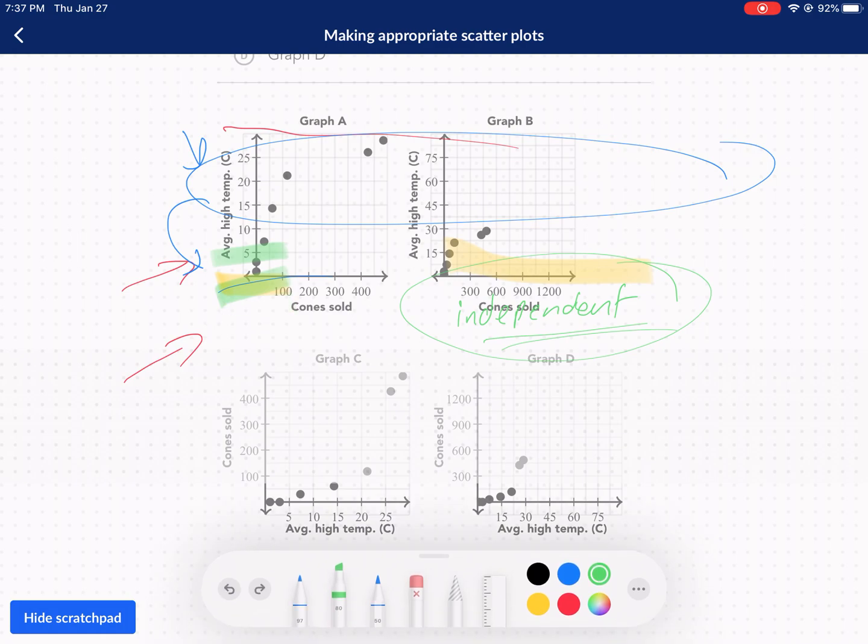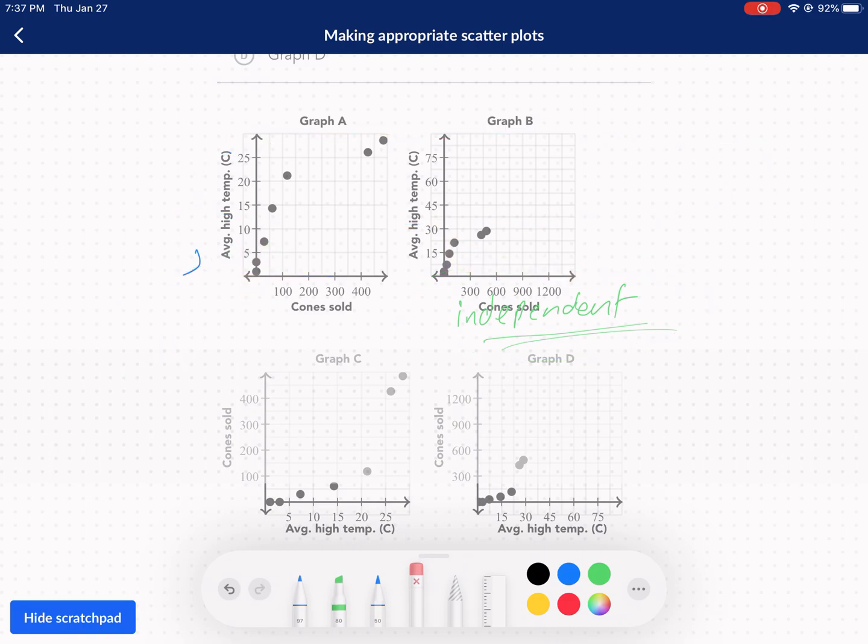So we need to make sure that's on the x-axis. I'm just going to swipe across the screen. So we want on the x-axis the independent variable. So we want temperature on both of those. Now the other part is really just kind of aesthetic. So we have cones sold on the y-axis for both of those. That's good.